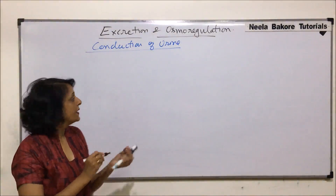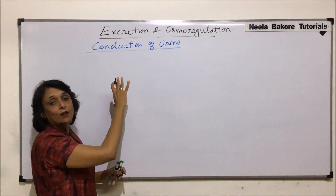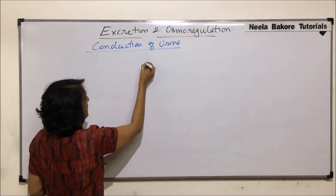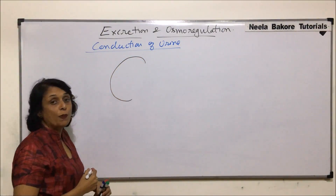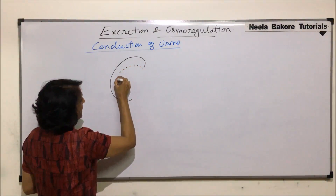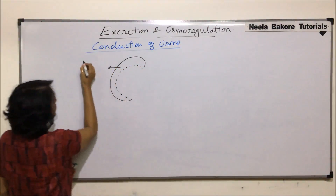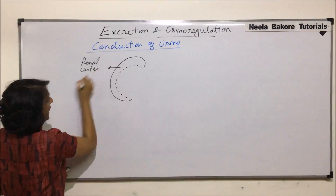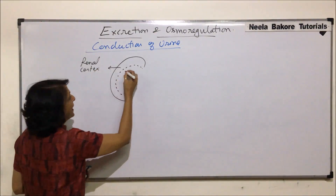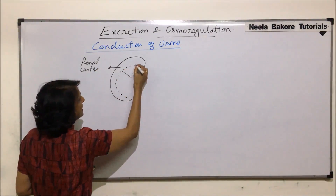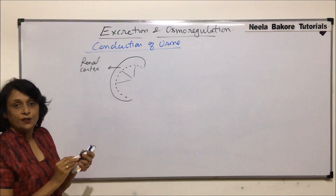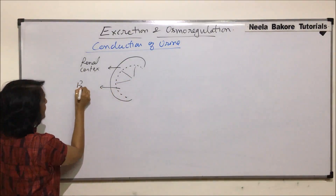To understand this, we will draw a simple diagram where we make the kidney a little bigger and the bladder a little bigger. When we make kidneys, we know there are two parts: the outer cortex and the inner medulla. The outer part is the renal cortex, and the inner part, where we see those pyramid-like structures, is the renal medulla.